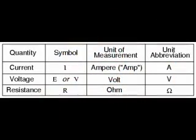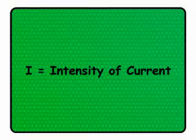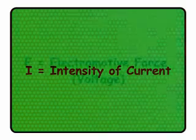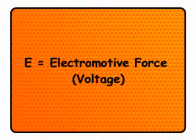The mathematical symbol for each quantity is meaningful as well. The R for resistance and the V for voltage are both self-explanatory, where I for current seems a bit weird. The I is thought to have been meant to represent intensity of electron flow, and the other symbol for voltage E stands for electromotive force.